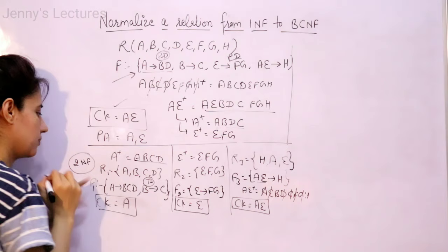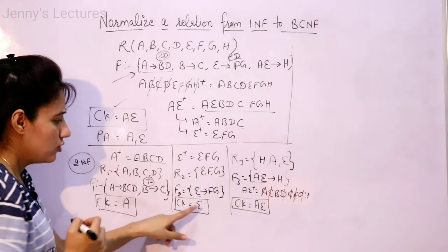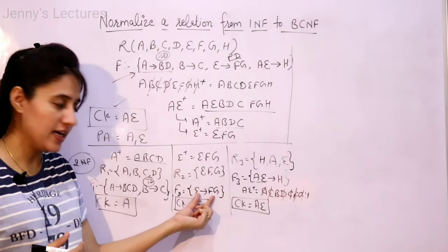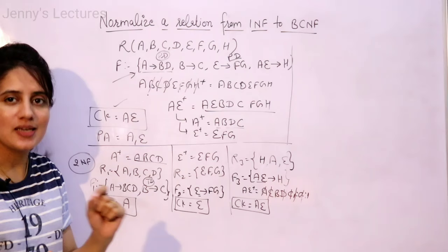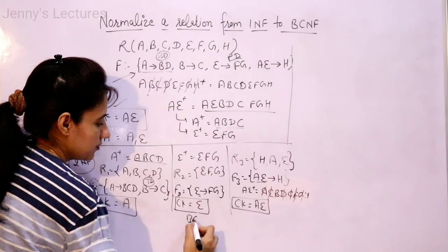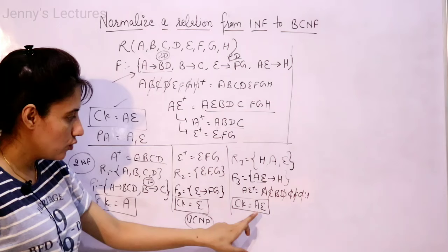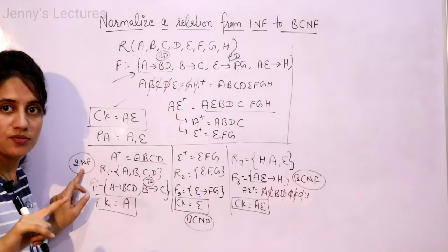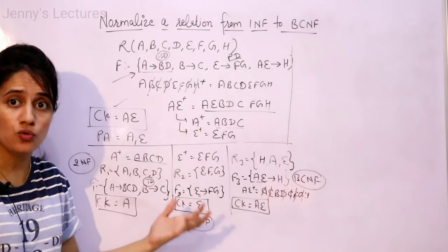Check R2: there is only one functional dependency E→FG, and E is the candidate key — left-hand side is a super key — so R2 is in BCNF. Check R3: the functional dependency is AE→H, and AE is the candidate key, so left-hand side is a super key — R3 is also in BCNF. But R1 is still in second normal form, so the overall decomposition is in second normal form since we choose the lowest. We need to further work on R1 only.